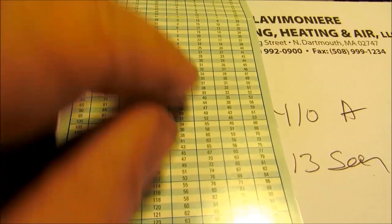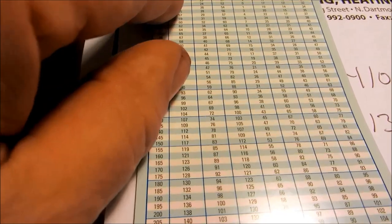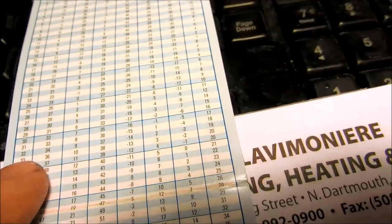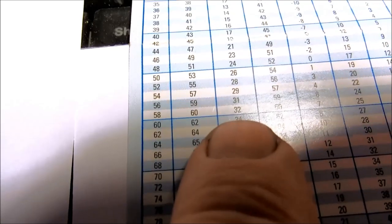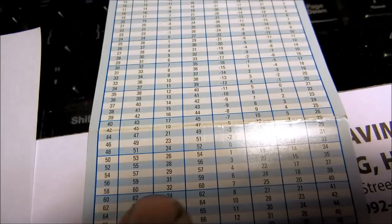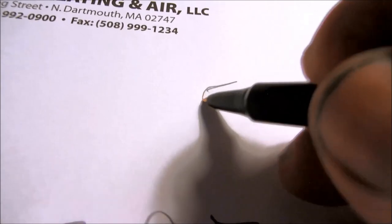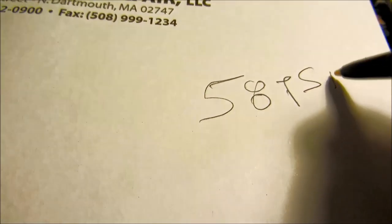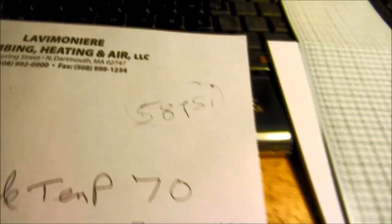Another thing to look for on the R-22 and 410a, I always look at 32 which is freezing. Anything below 58 PSI on a R-22 system, I'm always concerned about that because that's starting to get to the freezing temperatures.